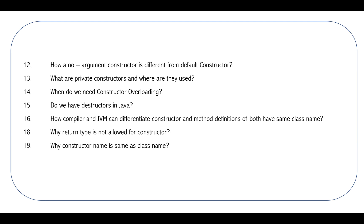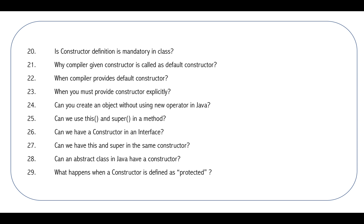Can we call a subclass constructor from a superclass constructor? What happens if we keep a return type on a constructor? What is a no-argument constructor? How is a no-argument constructor different from a default constructor? What are private constructors and where or why are they used? When do we need constructor overloading? Do we have destructors in Java? How can the compiler and JVM differentiate constructor and method definitions when both have the same class name? Why is a return type not allowed for a constructor? Why is the constructor name the same as the class name? Is constructor definition mandatory in a class? Why is the compiler-given constructor called the default constructor? When does the compiler provide a default constructor? When must you provide a constructor explicitly? Can you create an object without using the new operator? Can we use this and super keywords in a method? Can we have a constructor in an interface? Can we have this and super in the same constructor? Can an abstract class in Java have a constructor? What happens when a constructor is defined as protected?